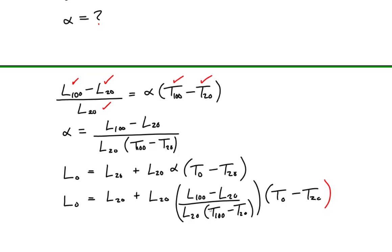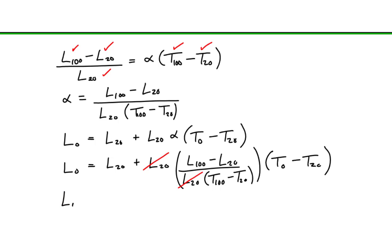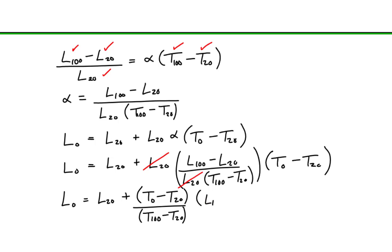We can simplify by eliminating the length at 20 degrees from the numerator and denominator. The length at 0 degrees equals the length at 20 degrees plus the ratio of the temperature differences at 0 degrees and at 100 degrees, multiplied by the difference in lengths between 100 degrees and 20 degrees Celsius. We have now expressed the length at 0 degrees as far as we can algebraically.